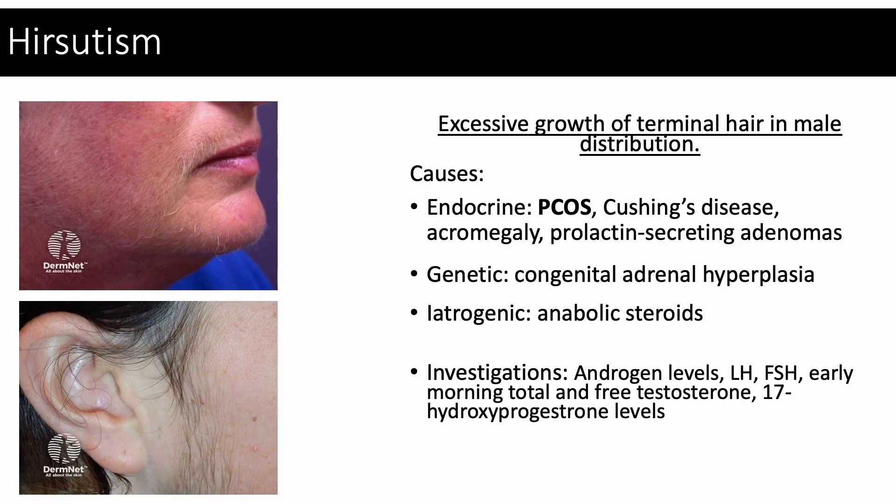Hirsutism means excessive growth of terminal hair in a male distribution. These sites include inner thighs, lower abdomen, breasts, chin, lateral cheeks, and upper cutaneous lip. Hirsutism results from excess androgen and increased androgen sensitivity. The most common cause is polycystic ovarian syndrome, or PCOS.